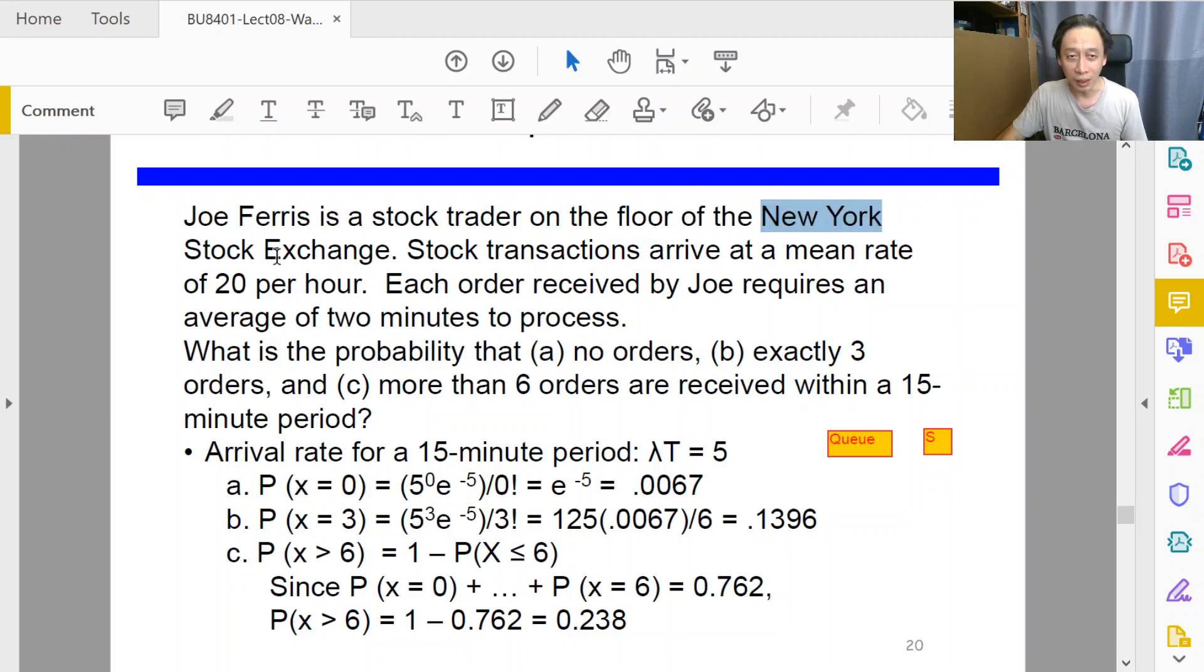Stock transactions arrive at a mean rate of 20 per hour. Remember, the word 'arrive' suggests that most likely whatever arrives must be the customer. So let's say the customer is the stock transaction, and we are being told that lambda is 20 per hour. So that's nice. Let's write that down: lambda equals 20 transactions per hour.